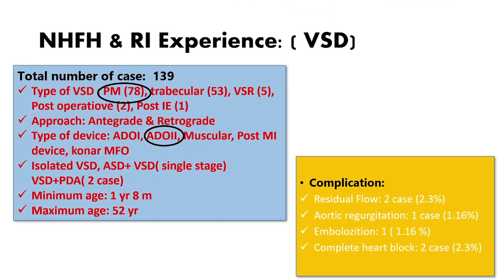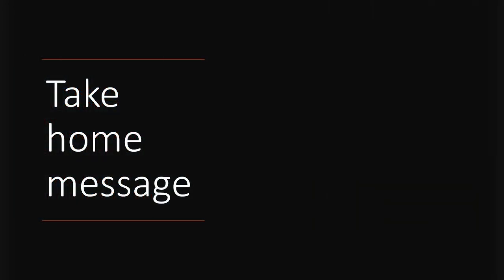Our experience totals 139 cases, mostly perimembranous VSD. Both antegrade and retrograde approaches were used, but predominantly retrograde. ADO2 was used most commonly. We closed both isolated VSDs and in combination with ASD or PDA. The minimum age was one year eight months and the maximum age was 52. Complications included residual flow in 2.3%, aortic regurgitation in 1.6%, embolization in one case, and complete heart block in two cases, which required surgical device retrieval.